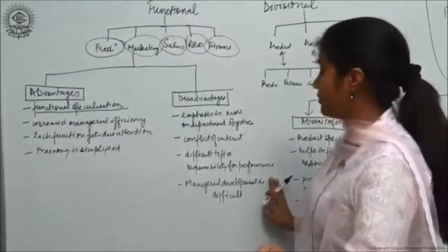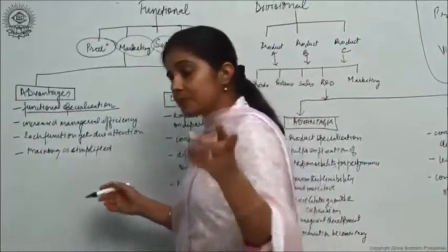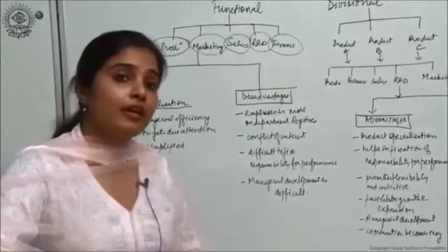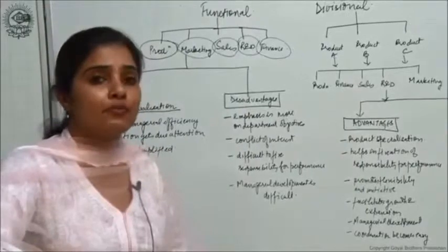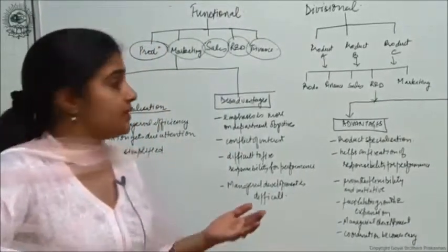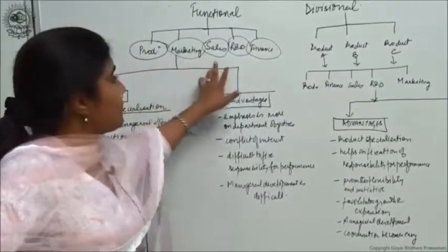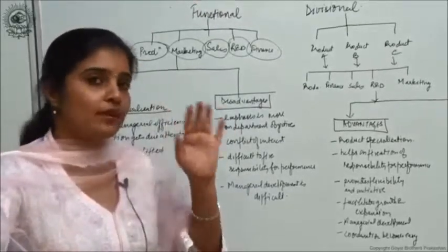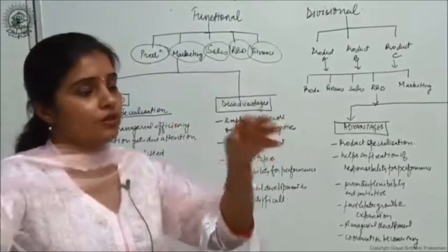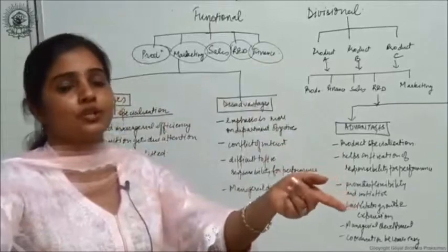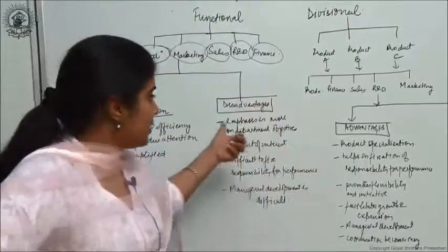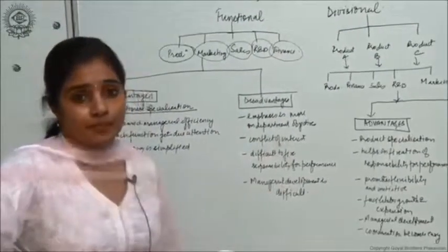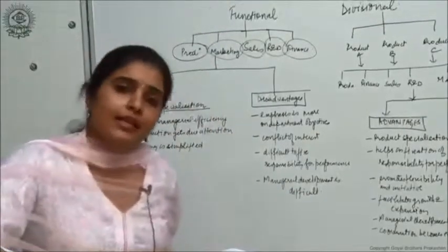However, there are also disadvantages of the functional structure. First, emphasis is placed more on departmental objectives rather than overall organizational objectives — you lose sight of the broader organizational goals. Second, there is inter-departmental rivalry, where each department tries to prove it performs better than others. Third, there can be conflict of interest — for example, the sales department may push for decisions that benefit sales at the expense of other functions.